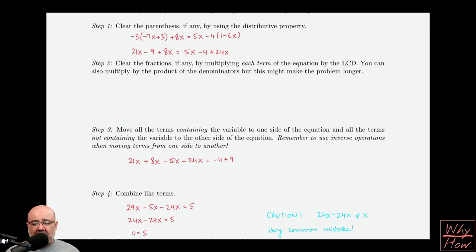24x minus 24x is not equal to x. It is just 0. If you subtract something from itself you always get 0 as the answer. 24x minus 24x is just going to be 0. They're going to cancel each other out, and you're left with 0 equals 5.